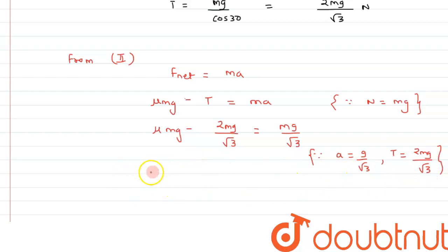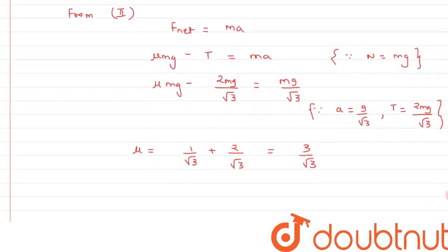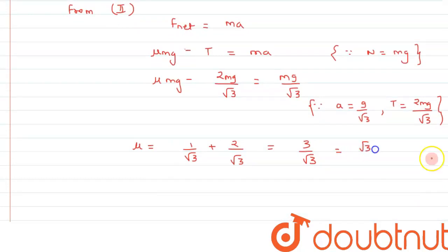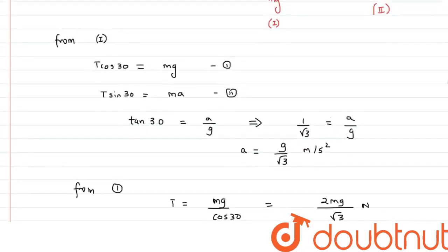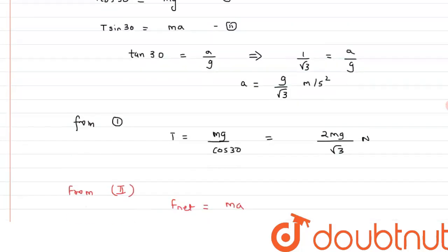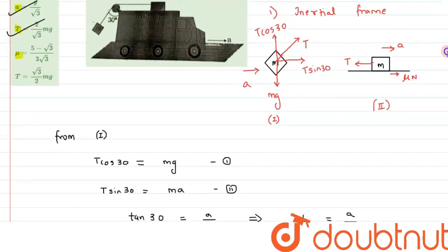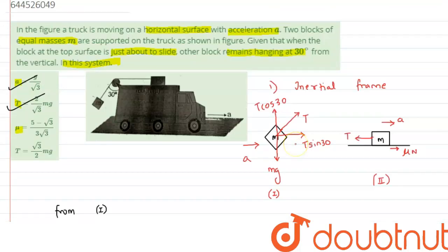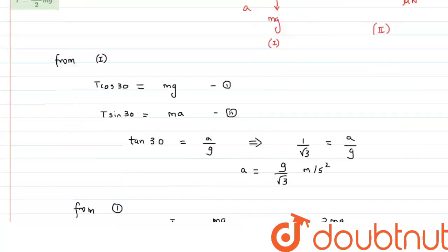From here we can say mg mg will get cancelled out. So we are left with mu is equals to 1 by root 3 plus 2 by root 3 and that is equals to 3 by root 3. So this is the value or this can be written as root 3. So this is the value of coefficient of friction we are getting and if we check it is not matching with the option. So we can say option A and B is the right answer to this question.